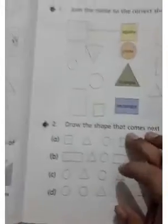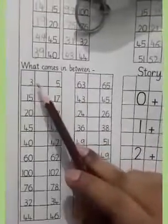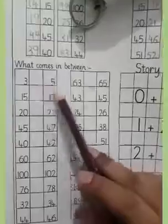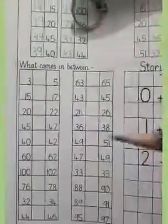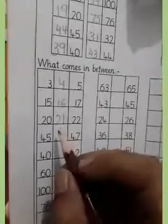We will not do page 27 today — just color that page and clear your concepts. Next time we will do page 27. From the workbook, we have 'what comes in between.' Write the middle number: between 3 and 5 comes 4; between 15 and 17 comes 16; between 20 and 22 comes 21; between 45 and 47 comes 46.